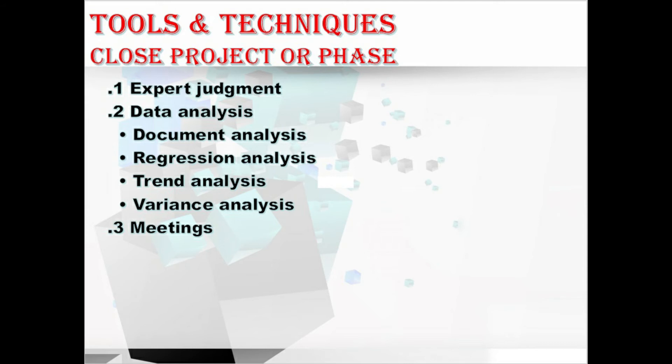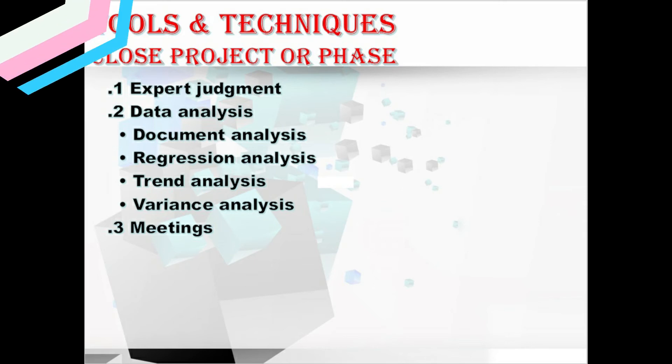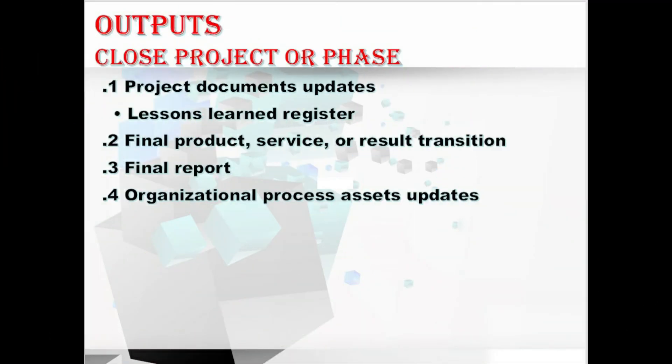We have completed all the tools and techniques for the Close Project or Phase process. Let's move to the outputs. First, we have project document updates, which contains the lessons learned register. All project documents may be updated and marked as final version as a result of the project closure.